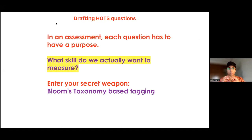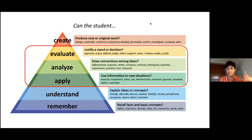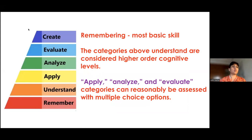I want to introduce Bloom's Taxonomy based tagging. We know the Bloom's triangle has skills that go from remember to create — remember being the lowest order skill and create being the highest. Apply, analyze, and evaluate have been circled because in an English assessment, these three can still be quite reasonably assessed through multiple choice questions.